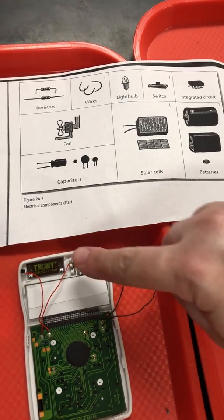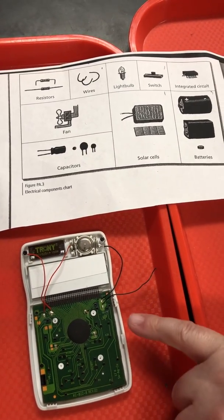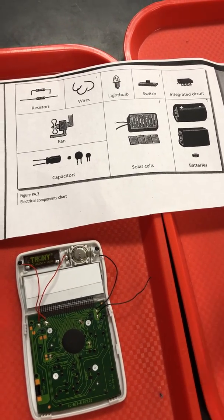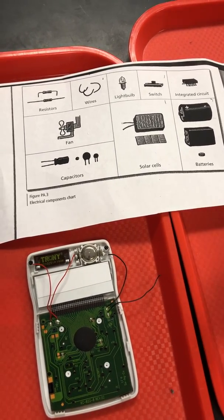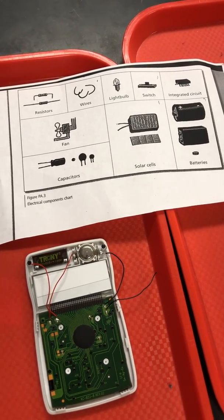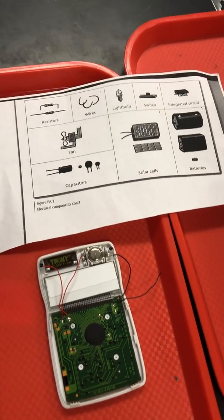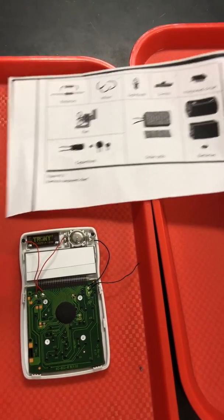We have a battery, wires, a solar panel. You want to look for: is there a capacitor, are there resistors, is there a switch? Not every device is going to have all of these different components, so you just draw and label what you see.